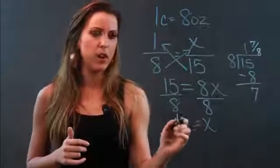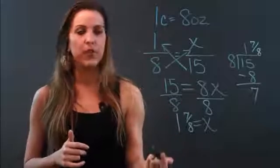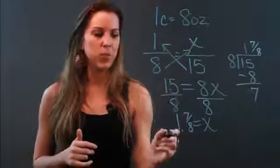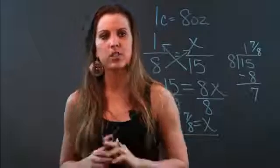So x is equal to 1 and 7 eighths. So a 15 ounce can is equal to 1 and 7 eighths cup. So almost 2 cups.